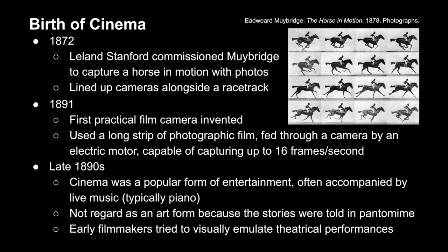In 1891 the first practical film camera was invented, using very long strips of photographic film fed through by an electric motor, capable of capturing about 16 frames per second. Later in the 1890s, cinema became a popular form of entertainment, often accompanied by other arts like music typically played by a piano. Though it was still not regarded as an art form, early filmmakers tried to situate themselves within that context, for instance by visually emulating theatrical performances.